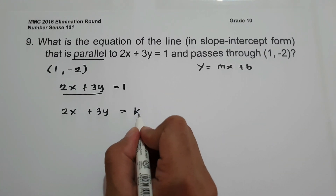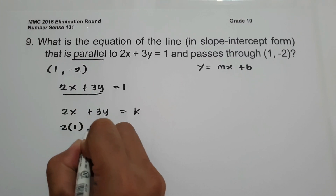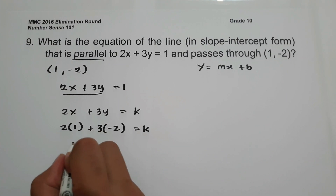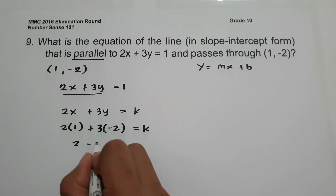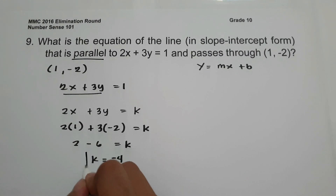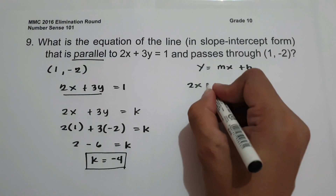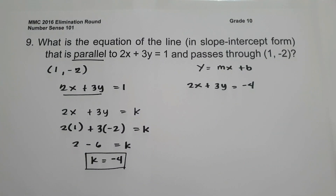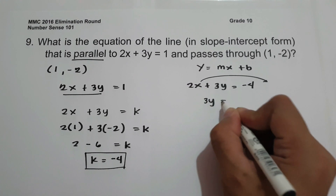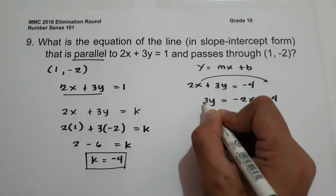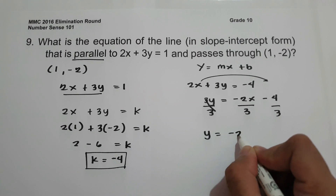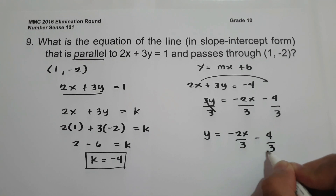To find the value of k, substitute x equals 1 and y equals negative 2: 2 times 1 plus 3 times negative 2 equals k, giving 2 minus 6 equals k, so k equals negative 4. Therefore the equation is 2x plus 3y equals negative 4. Converting to slope-intercept form: moving 2x gives 3y equals negative 2x minus 4, and dividing by 3 gives y equals negative 2x over 3 minus 4 over 3. This is our answer.